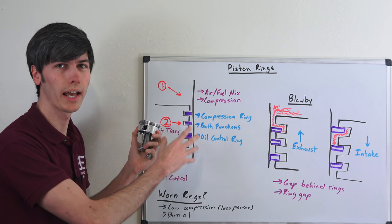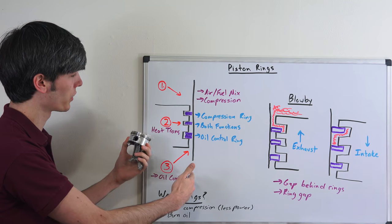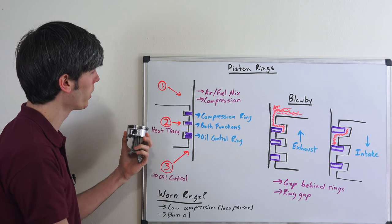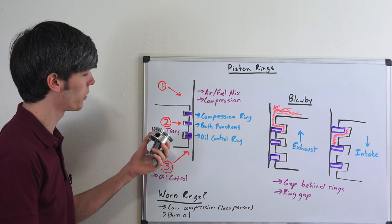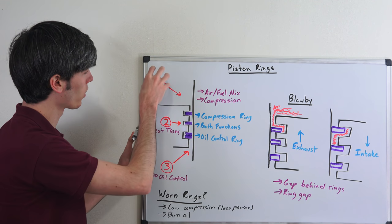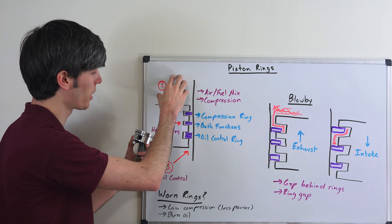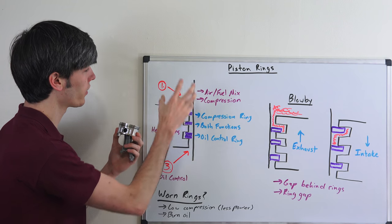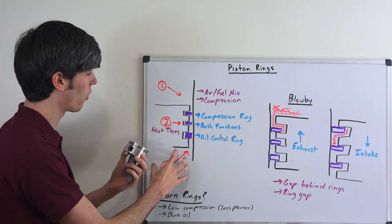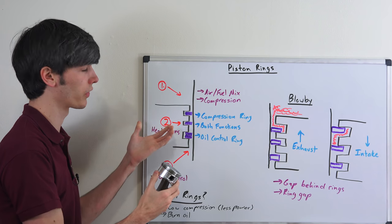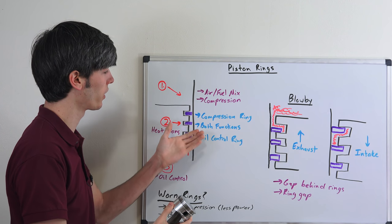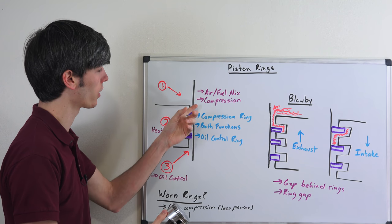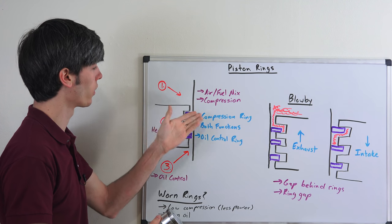Getting right into it, piston rings really have three main functions. Here we have our cylinder wall, here's our piston with these three piston rings. The three major roles are: they keep whatever is in the combustion chamber out of your crankcase, they keep whatever is in your crankcase out of your combustion chamber where you have oil, and they also help facilitate heat transfer between your piston and the cylinder wall. Your pistons are in contact with the piston rings, those are in contact with the cylinder walls, and that's how heat is going to be transferring from your pistons to your cylinders.